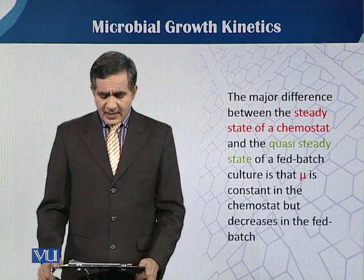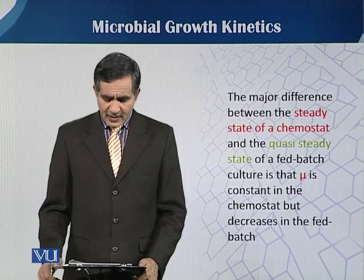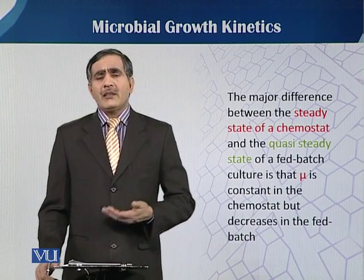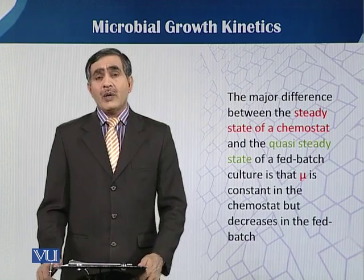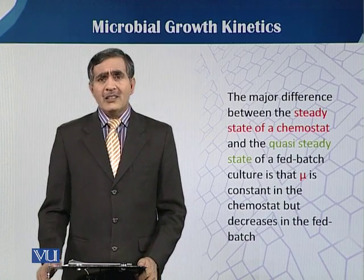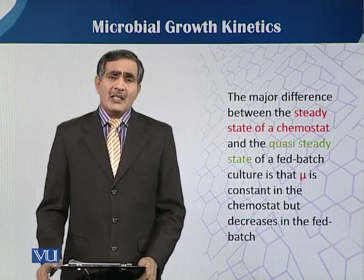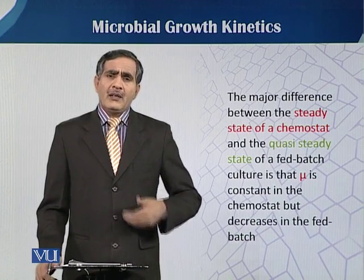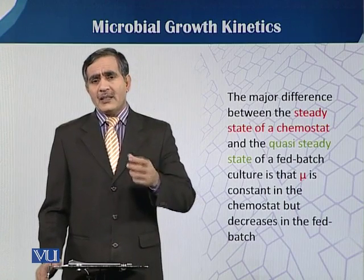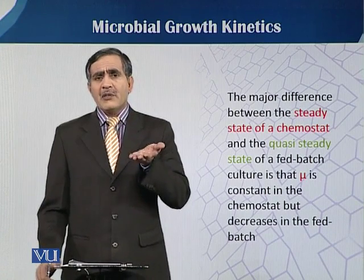The major difference between the steady state of a chemostat and the quasi steady state of fed batch culture is that mu is constant in the chemostat but decreases in fed batch. In a chemostat, mu equals D so there is no change in biomass concentration — dx/dt equals zero — which is only possible when residual substrate is also zero. In fed batch, if substrate is added such that residual substrate concentration increases, there is a gradual increase of those substrates.